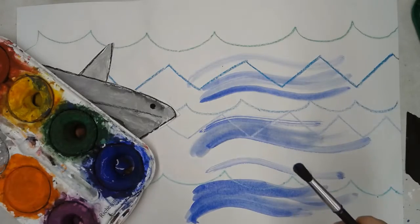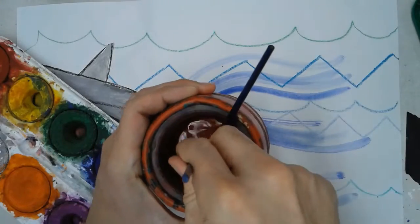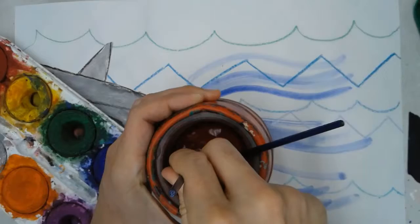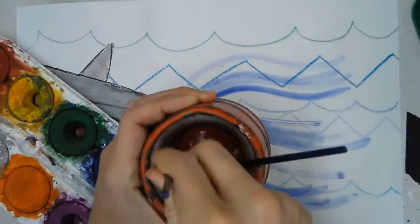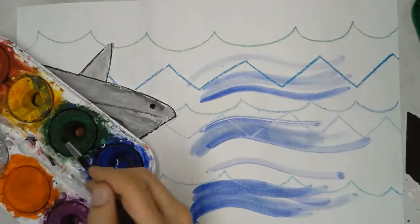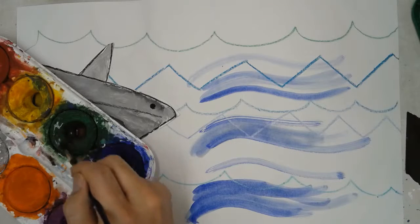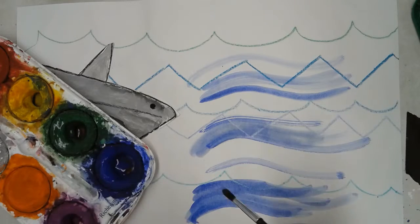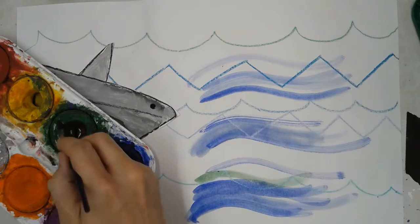Now I need to get my brush clean. I'll go dip, dip, spin, spin, spin. Dip, dip, spin, spin, spin. That will be nice and clean, ready to go so that I can use a new color. I'm going to go with green this time, and I'm going to go green right next to where I painted that blue.